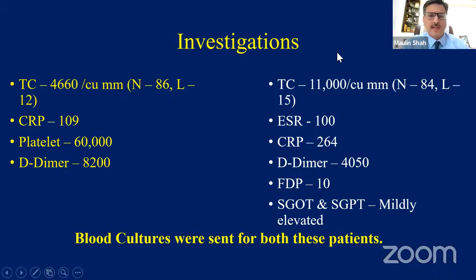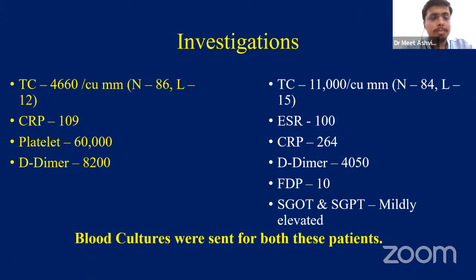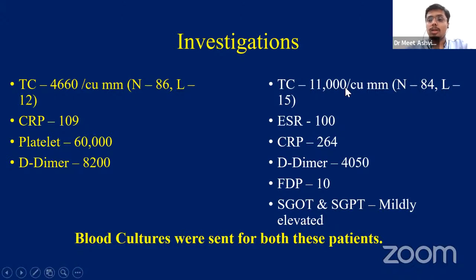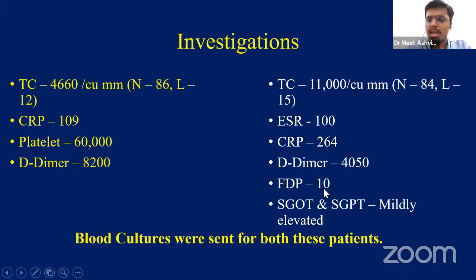In the six-year-old patient with hip complaints, the total count was not raised — around 4,600. CRP was 109, platelets were significantly reduced at 60,000, and D-dimer was extremely high at 8,200. In the patient with proximal humerus complaints, total count was 11,000, ESR was 100, CRP 264, D-dimer was 4,000. There was also mild elevation of SGOT and SGPT. Blood cultures were sent for both patients.